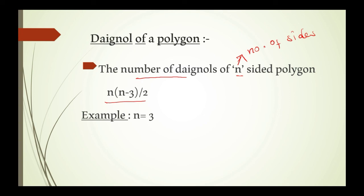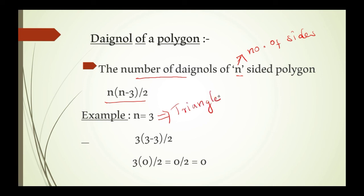Example: I have taken number of sides as 3 — that means the polygon is a triangle. Substituting: 3 into 3 minus 3 by 2. That gives 3 into 0 by 2, which equals 0. So a triangle has no diagonals. We can draw and check — in a triangle, we cannot draw any diagonal between non-consecutive vertices.